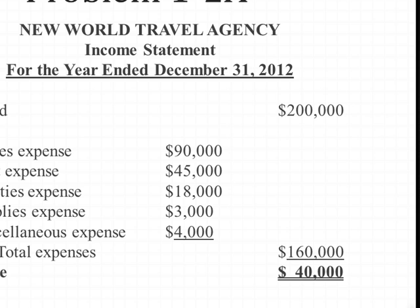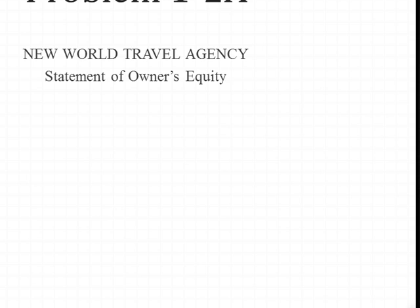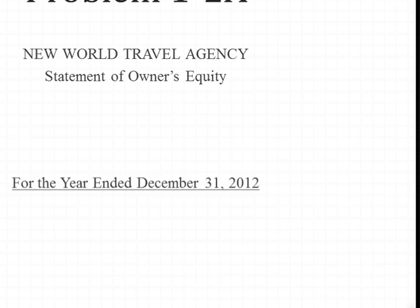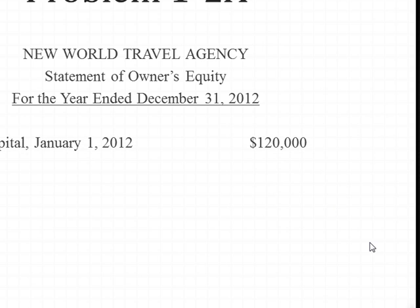The next statement we want to create is the statement of owner's equity. We start with the title of the company, the name of the statement, and the period — for the year ended December 31, 2012. The first thing we want to list is the beginning capital. The problem stated that as of January 1, 2012, Chris Tabor started off with $120,000 in capital.